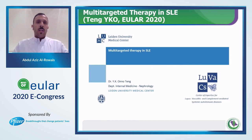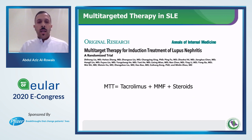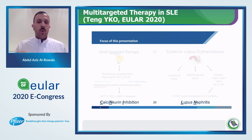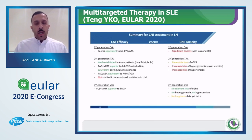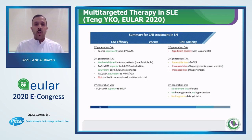We start with multi-targeted therapy in SLE. This terminology was adapted from a randomized trial published in 2015, where multi-targeted therapy was studied as adding tacrolimus to mycophenolate mofetil and steroids for induction treatment of lupus nephritis. The main focus was on calcineurin inhibition in lupus nephritis patients, since all randomized trials on calcineurin inhibition were done on lupus nephritis patients. Calcineurin inhibition is a widely established effective immunosuppressant, and meta-analyses suggest that calcineurin inhibitors, either alone or as part of a multi-target regimen, may have a favorable efficacy-to-toxicity ratio in lupus nephritis management.